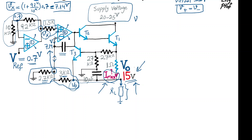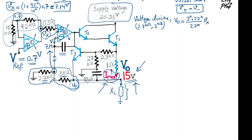Using voltage division between 2.7k and 3k, we can write Vout = ((3k + 2.7k) / 2.7k) × Vx. Substituting the values, we get Vout = (5.7 / 2.7) × 17.14, which turns out to be roughly 15 volts.